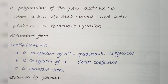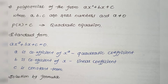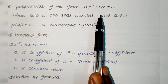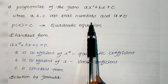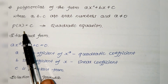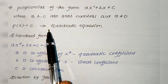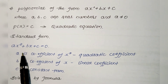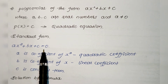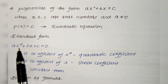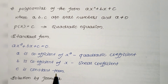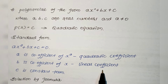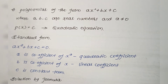Hello everyone. Today let's see some different problems based on quadratic equations. A polynomial of the form ax² + bx + c is called a quadratic polynomial, where a, b, c are real numbers and a is not equal to zero. If we equate the polynomial to a constant, then it is called a quadratic equation. The standard form is ax² + bx + c = 0, where a is the coefficient of x², b is the coefficient of x, and c is the constant term.